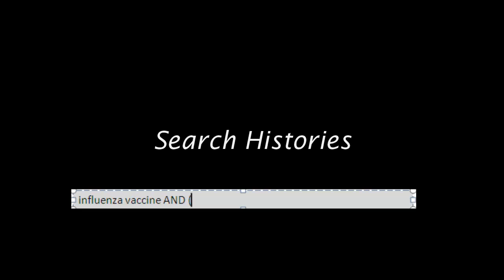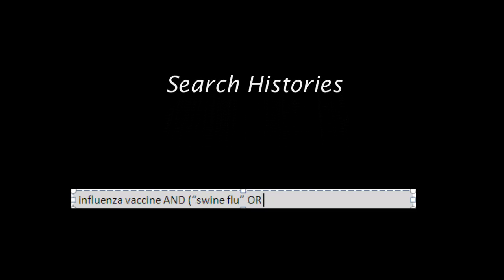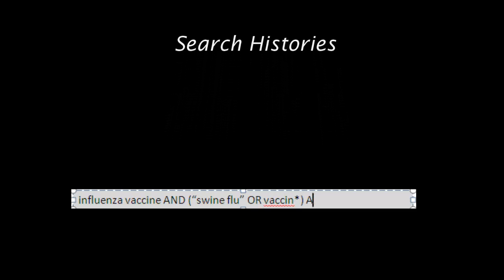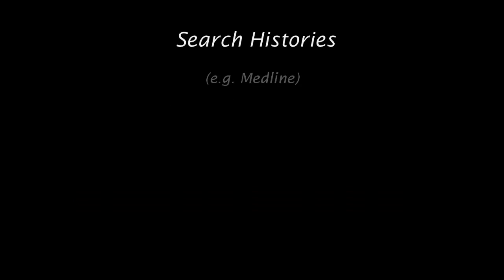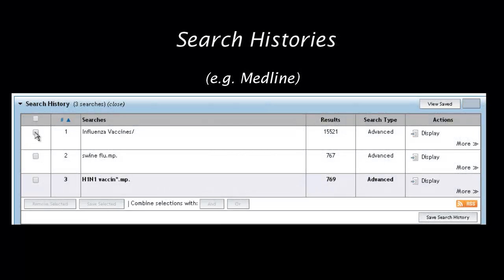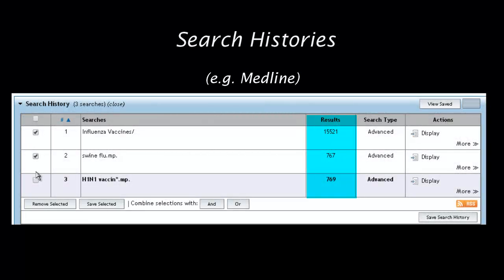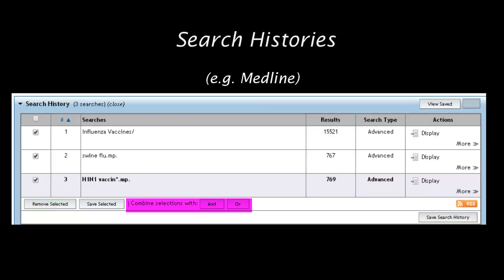One unique feature of databases is their ability to track your search history. Instead of forcing all your search terms into a single line like you might in Google, the search history allows you to search one subject heading or keyword at a time, track your results, save your searches to rerun at a later date, and easily remove any terms that are not working. You also have the ability to combine these single terms to methodically build up more complex searches.